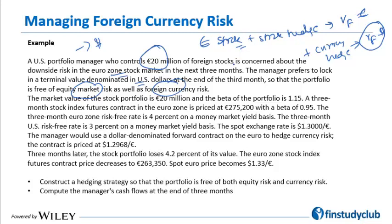The market value of the stock portfolio is 20 million euro and the beta of the portfolio is 1.15. We want to neutralize the beta using a three-month stock index futures contract. The eurozone index futures is priced at 275,200 with a beta of 0.95. The three-month eurozone risk-free rate is 4 percent; the three-month U.S. risk-free rate is 3 percent. The spot exchange rate is 1.3 dollar per euro. Since we have a euro asset, we sell euro on a forward basis.